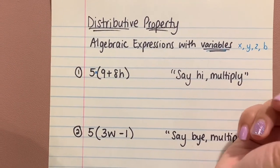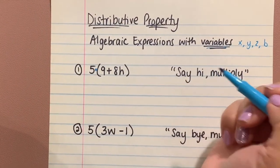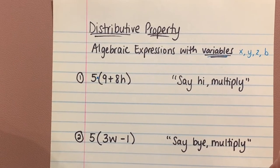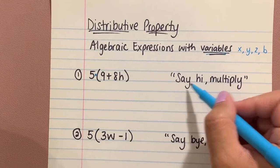It's basically invisible. So it's saying five times the sum of nine plus eight H. In my previous video, I always mentioned to my class: say hi, multiply.